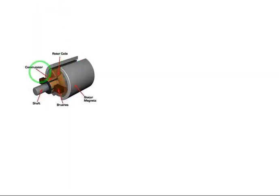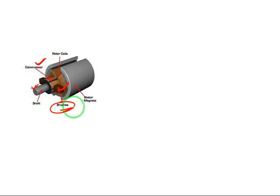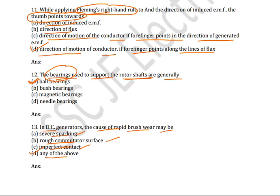Practically you can see how the commutator and brushes appear. This is the brush, this is the shaft, and this is the commutator. The cause of rapid brush wear may be due to severe sparking, rough commutator surface, or imperfect contact — so any of the above is the correct answer.